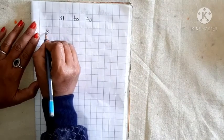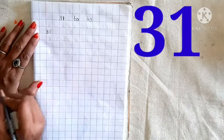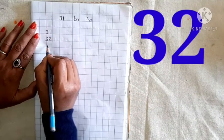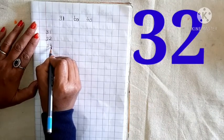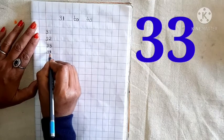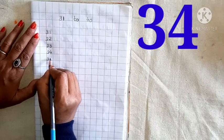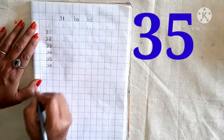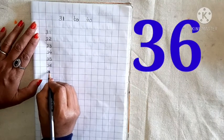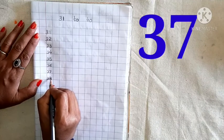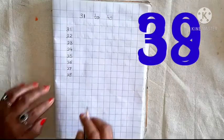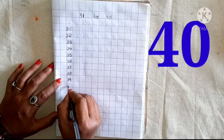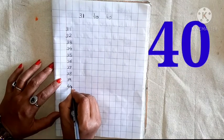यहाँ पर आपको क्या करना है. Vertical way. Vertical way means top to bottom. Top to bottom में आपको write करना है. Okay? Then write here. 3, 1, 31. Then down side. 3, 2, 32. 3, 3, 33. 3, 4, 34. 3, 5, 35. 3, 6, 36. 3, 7, 37. 3, 8, 38. 3, 9, 39. And 4, 0, 40. Okay?